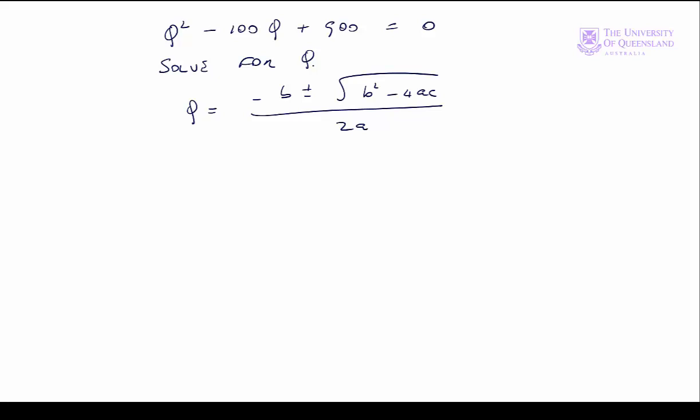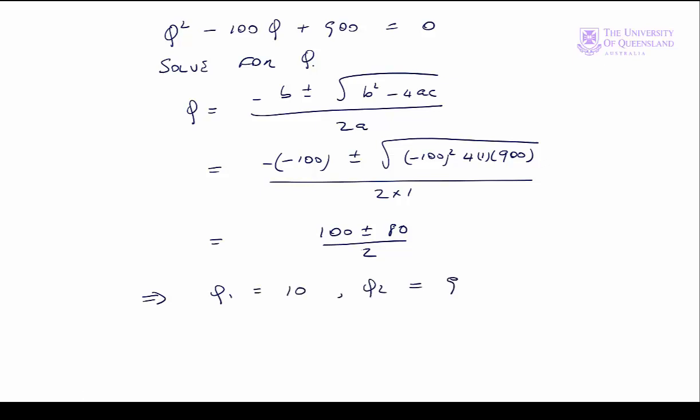Here we have our quadratic formula. We can substitute in our values. a equals 1, b equals minus 100, c is equal to 900. We can do that calculation. We get 100 plus or minus 80 on 2. That implies that q1 is equal to 10 and q2 is equal to 90. So we have two stationary points.